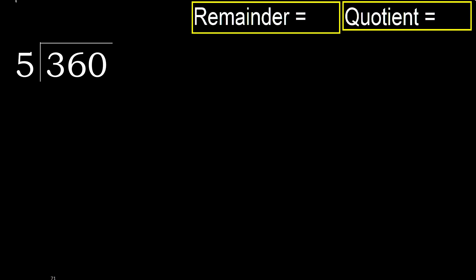360 divided by 5. 3 is less, therefore next. 36 is not less, therefore with 36. 5 multiplied by which number is nearest to 36 but not greater?